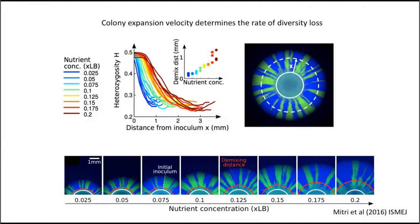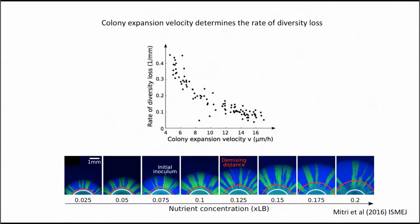To illustrate this, we took all our colonies, measured how quickly they were expanding, and plotted this against the rate of diversity loss — essentially the slope in the graph — and showed a very nice correlation: the faster the colony is growing, the slower it loses the strains that were present in the center at the beginning. We were also surprised that colonies always demixed — even when we added more nutrients they still made sectors. If we were to draw a line through this, it converges and flattens out but doesn't reach zero — zero meaning if you add enough nutrients it would stay mixed forever.